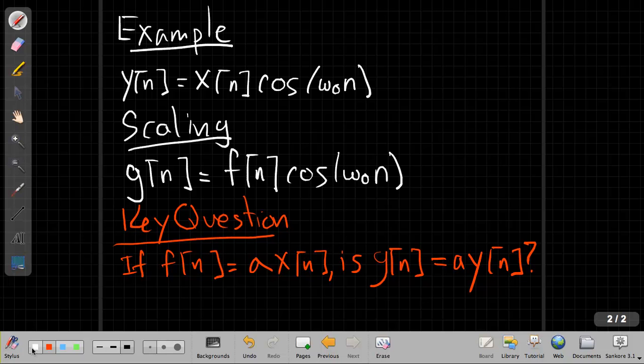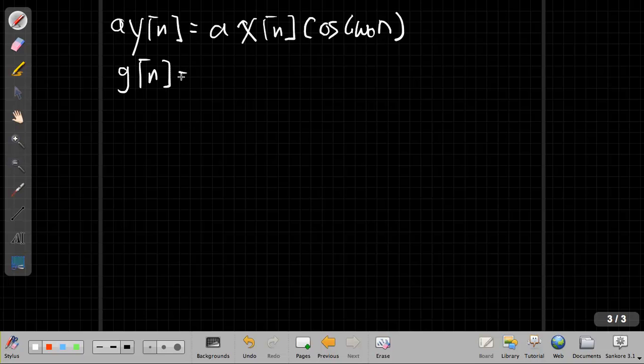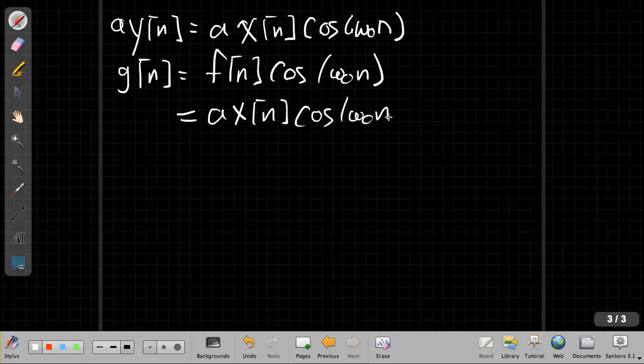If this new input f of n is a scaled version of the old one, is g of n, the new output, equal to a scaled version of the old output, which is a y of n? And we're going to check through that. In order to do that, we need to find an expression for both g and a y of n in terms of the original input x of n. So if I go on to the next page.